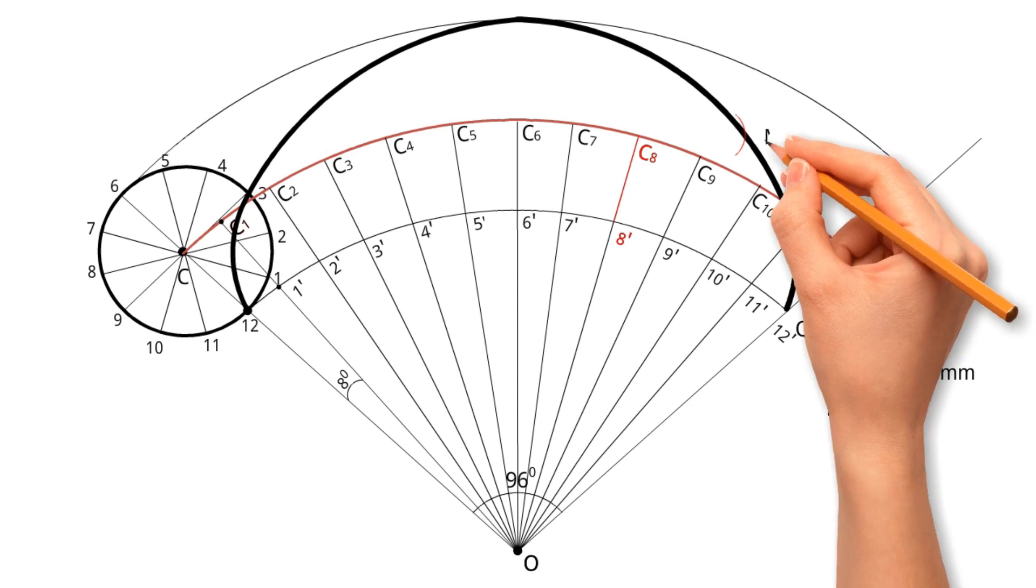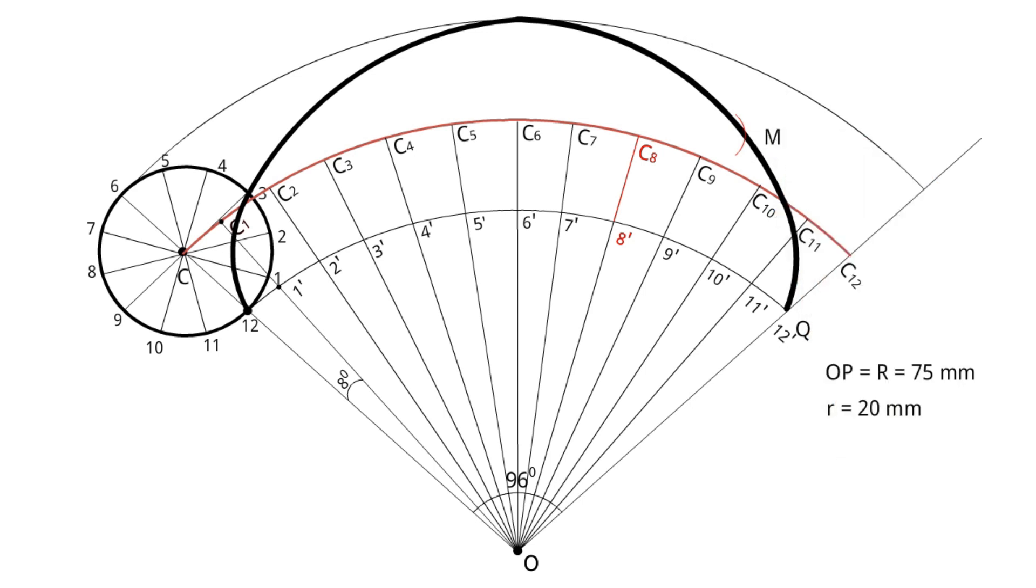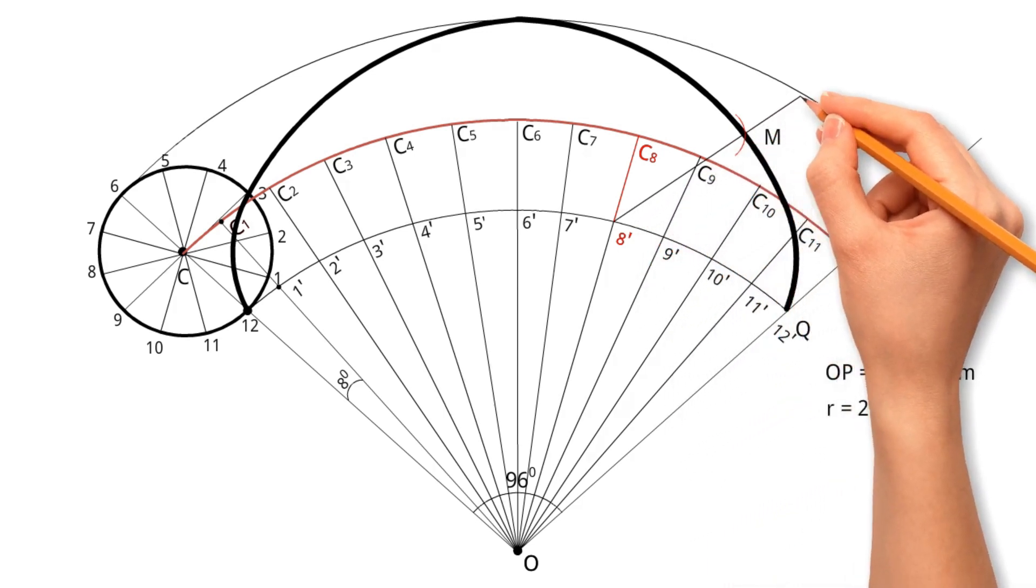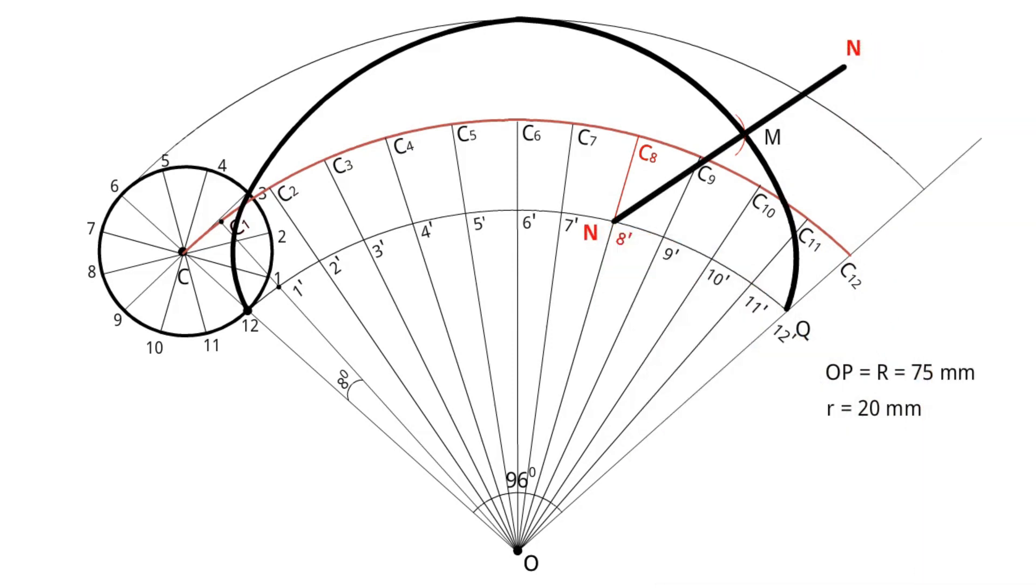At the point M as shown. Step 13. Join M-8 and extend. This line is called Normal.